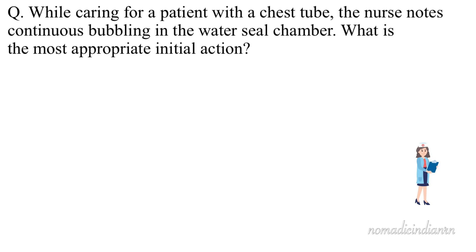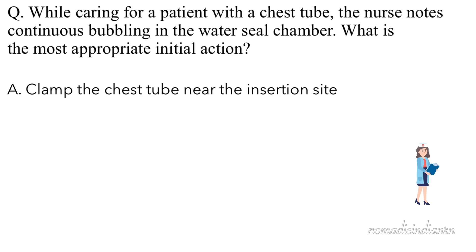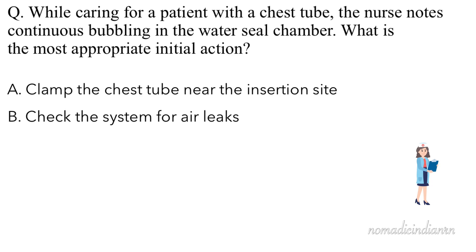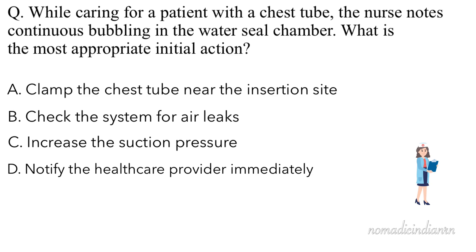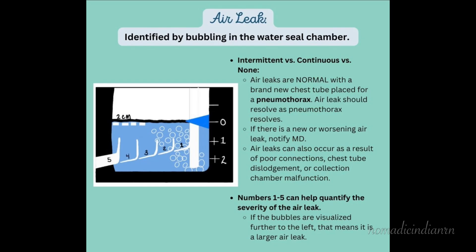Ready for another practice question? While caring for a patient with a chest tube, the nurse notes continuous bubbling in the water seal chamber. What is the most appropriate initial action? A. Clamp the chest tube near the insertion site. B. Check the system for air leaks. C. Increase the suction pressure. D. Notify the healthcare provider immediately. The answer is B — check the system for air leaks. Continuous bubbling in the water seal chamber indicates a possible air leak in the system. The nurse should systematically check the tubing and connections to identify and correct the source of the leak.